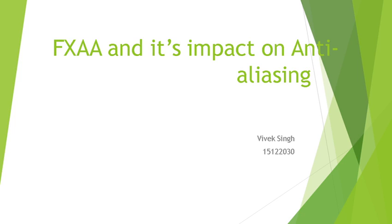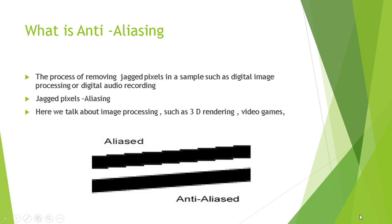FXAA was an out-of-the-box idea — a brilliant flash of inspiration that was quickly implemented. Let me acquaint you with the basics. Anti-aliasing is the process of removing jagged pixels in a sample such as a digital image. You can see that the first image has lots of jaggedness with sharp boundaries, while the second image is relatively smooth.